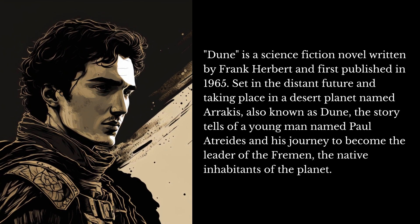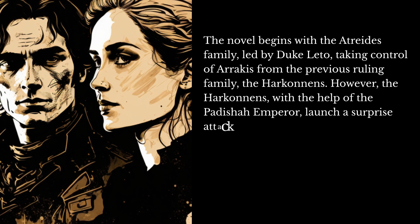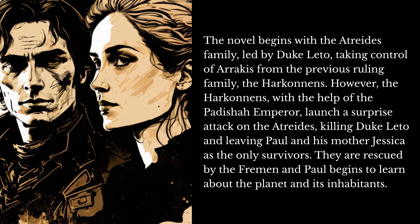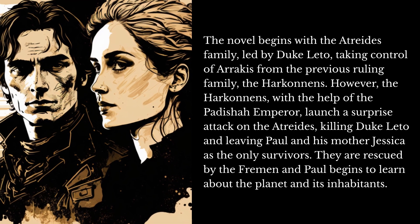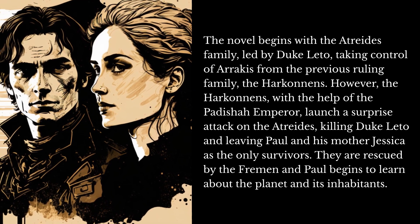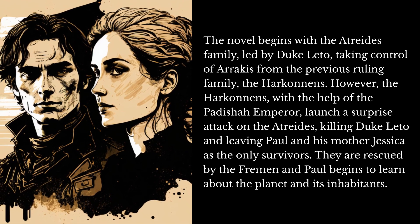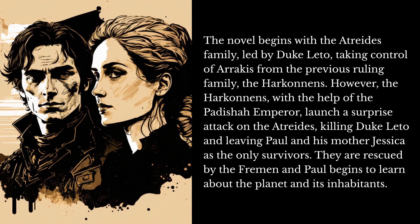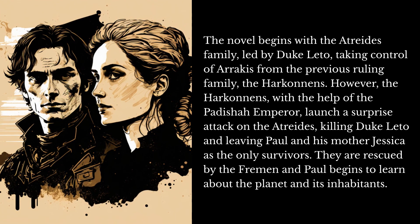The novel begins with the Atreides family, led by Duke Leto, taking control of Arrakis from the previous ruling family, the Harkonnens. However, the Harkonnens, with the help of the Padishah Emperor, launch a surprise attack on the Atreides, killing Duke Leto and leaving Paul and his mother Jessica as the only survivors. They are rescued by the Fremen.